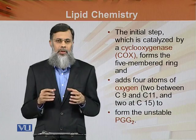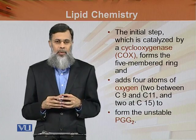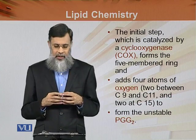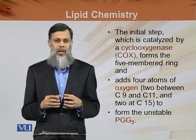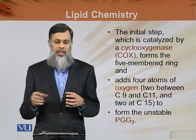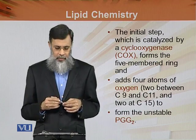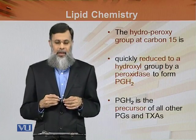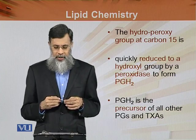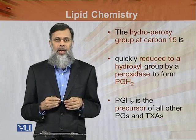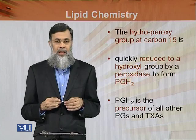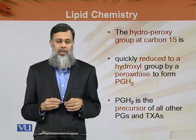Two oxygen atoms are added between carbon atom nine and eleven, and two oxygen atoms are added at carbon atom number fifteen of the straight chain, to form the unstable prostaglandin G2. So the first thing is that prostaglandin G2 will have a five-membered ring with two oxygens on the ring and two oxygens on the straight chain at position fifteen. The hydroperoxy group at carbon atom number fifteen is quickly reduced to a hydroxyl group by a peroxidase enzyme to form prostaglandin H2.